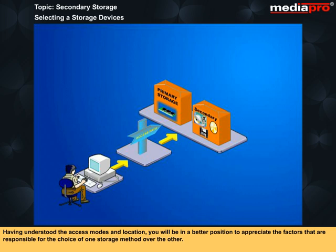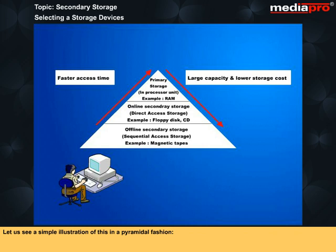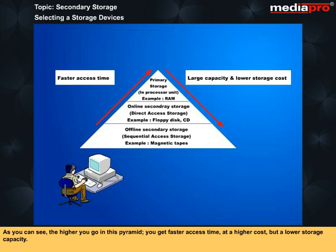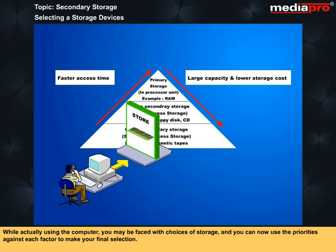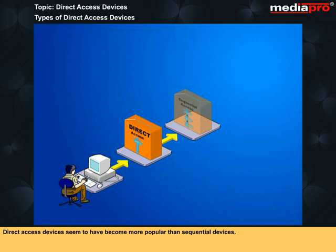Having understood the access modes and location, you will be in a better position to appreciate the factors that are responsible for the choice of one storage method over the other. Let us see a simple illustration of this in a pyramidal fashion. As you can see, the higher you go in this pyramid, you get faster access time at a higher cost but lower storage capacity. While actually using the computer, you may be faced with choices of storage and you can now use the priorities against each factor to make your final selection. Direct access devices seem to have become more popular than sequential devices.